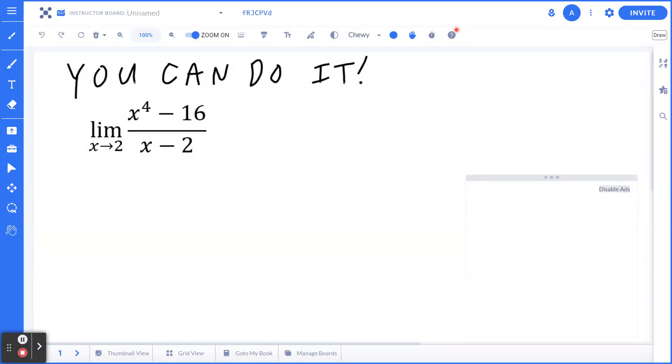Hi everyone. Let's take a look at the following example. Find the limit of x to the power of 4 minus 16 divided by x minus 2 as x is approaching 2.